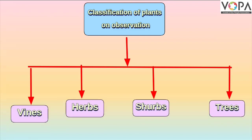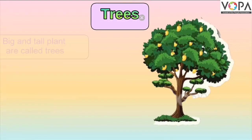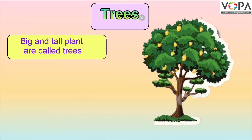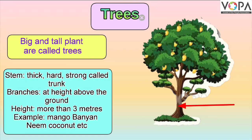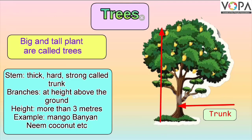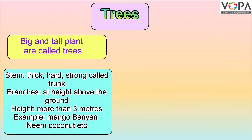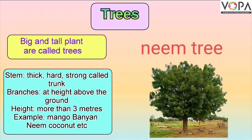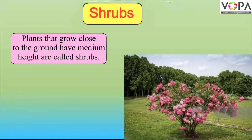Trees: Big and tall plants are called trees. Their stem is thick, hard, and strong — it is called a trunk. Trees have branches at some height, much above the ground. Trees grow more than three meters tall. Trees bear flowers and fruits. For example: mango, banyan tree, neem, coconut, etc.